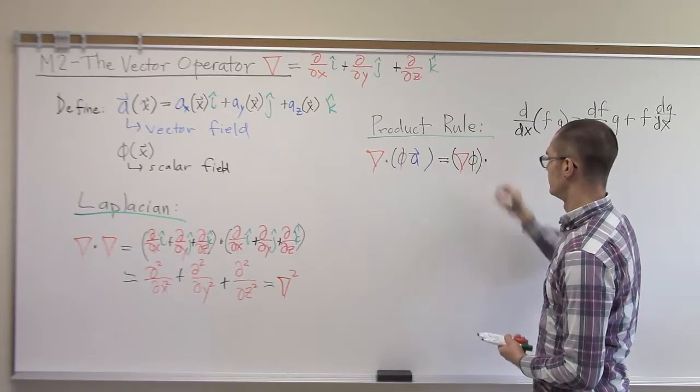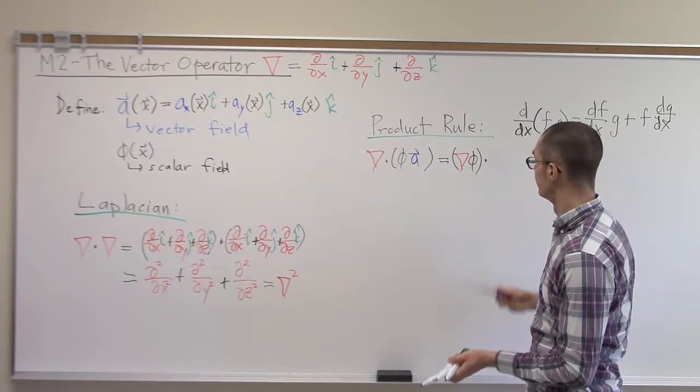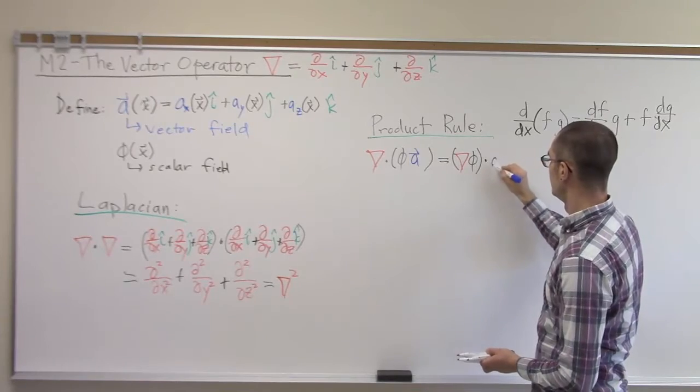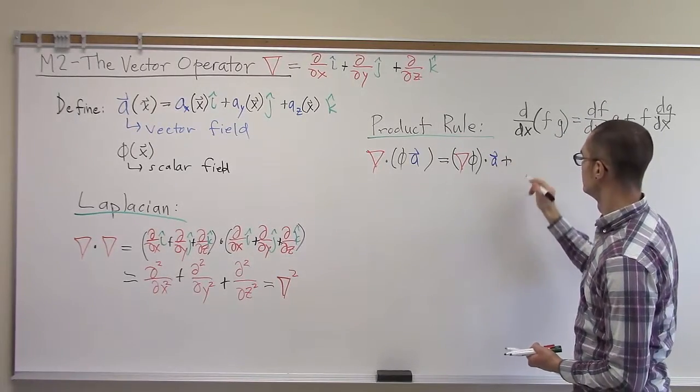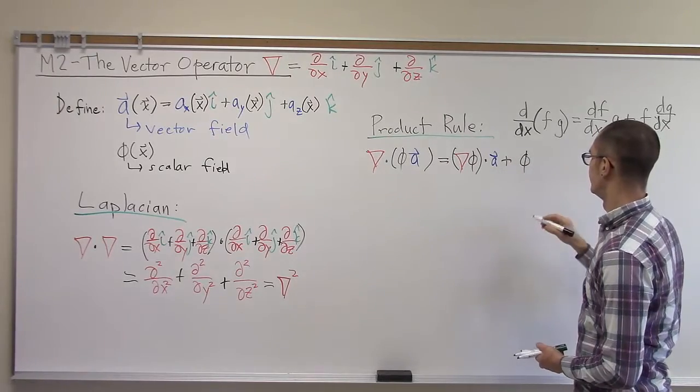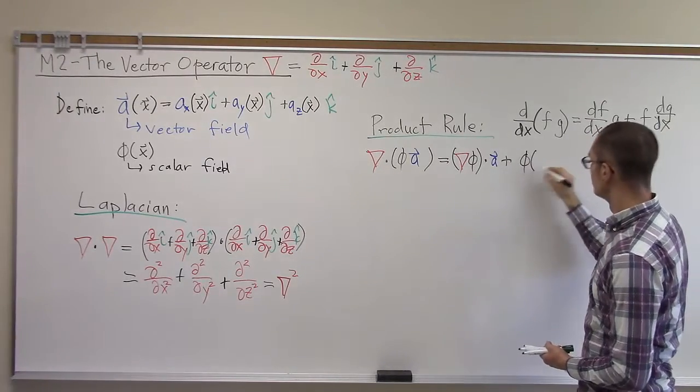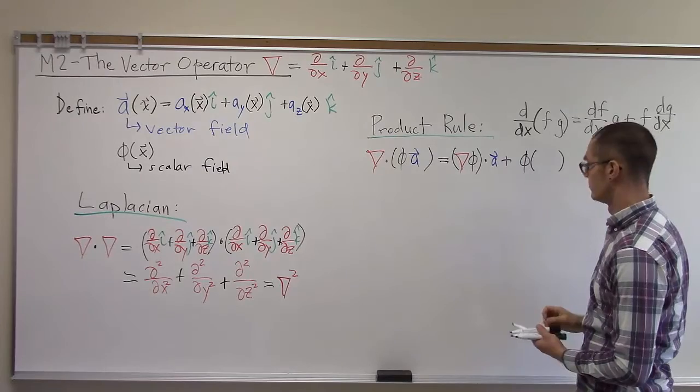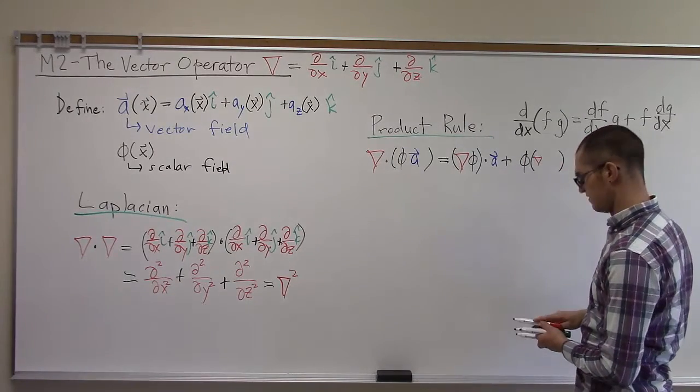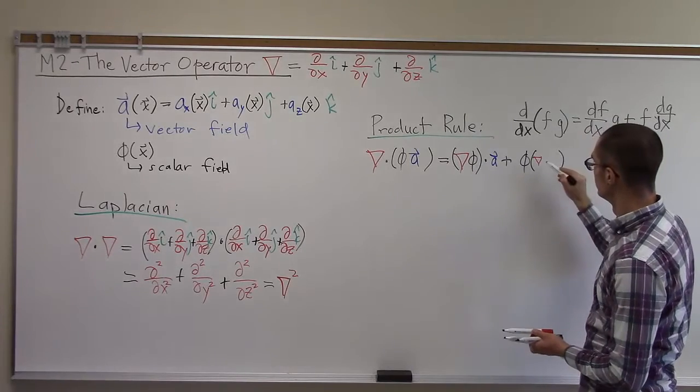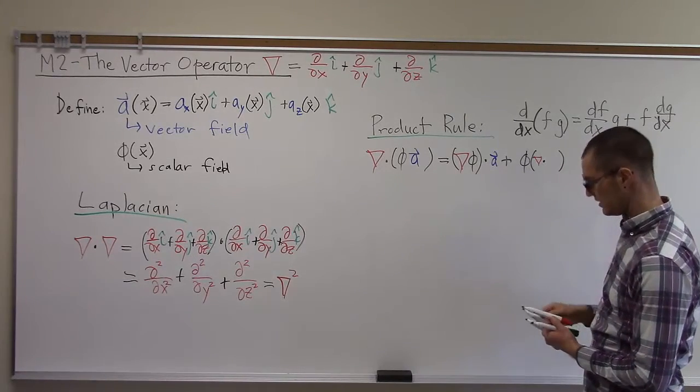When I do this product rule, what I end up with is that I take the derivative of the first, which is the gradient of phi, dotted with the vector field a, plus the scalar field phi, multiplied through scalar multiplication, with the divergence of a.